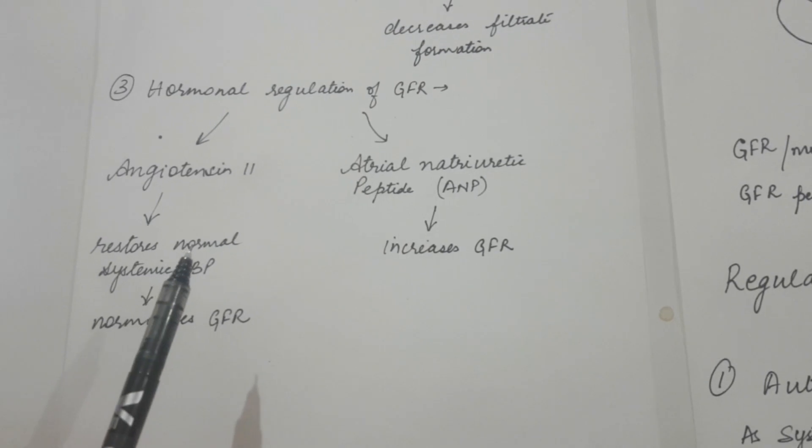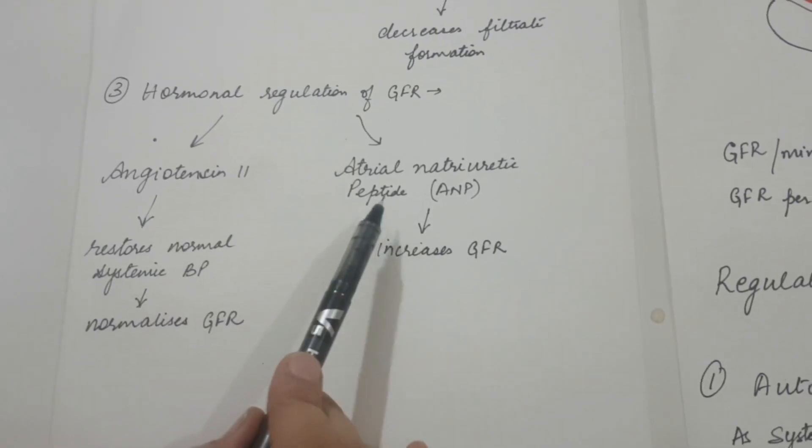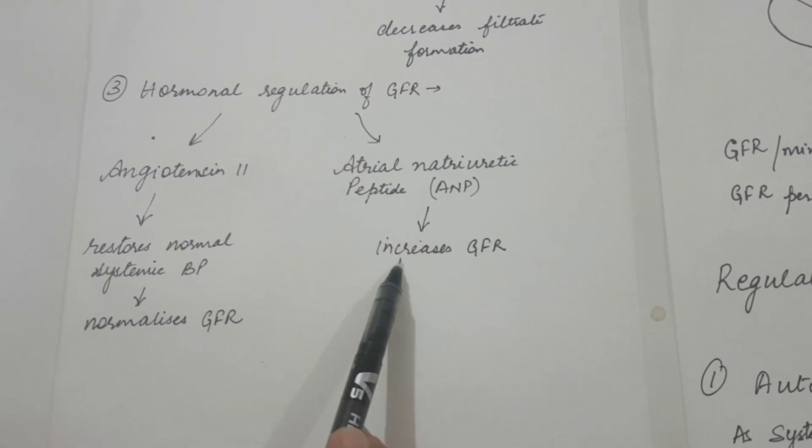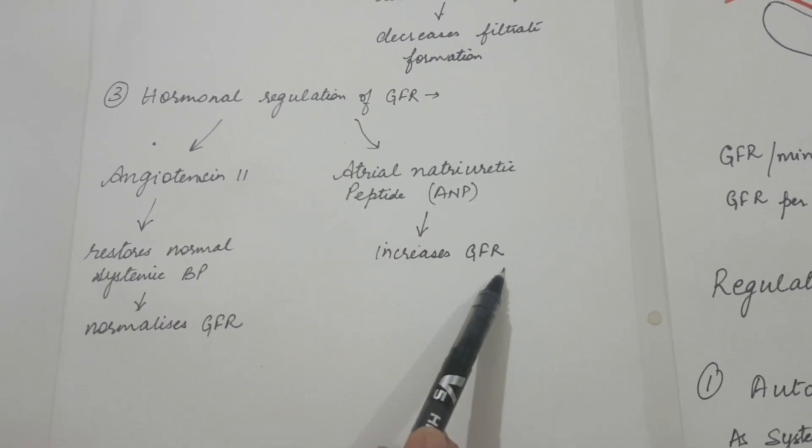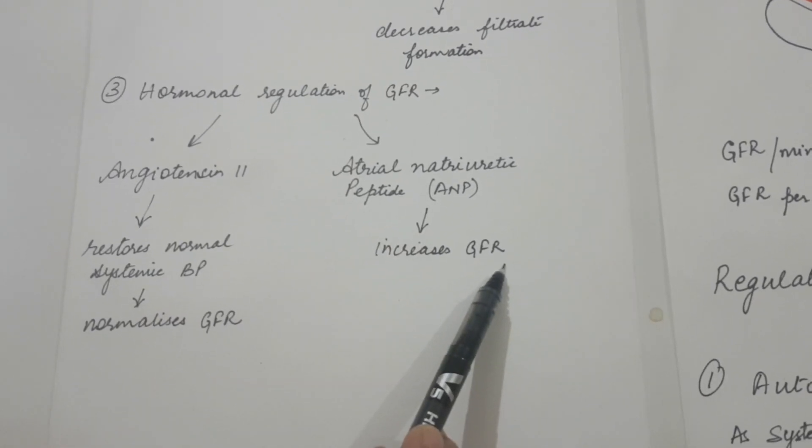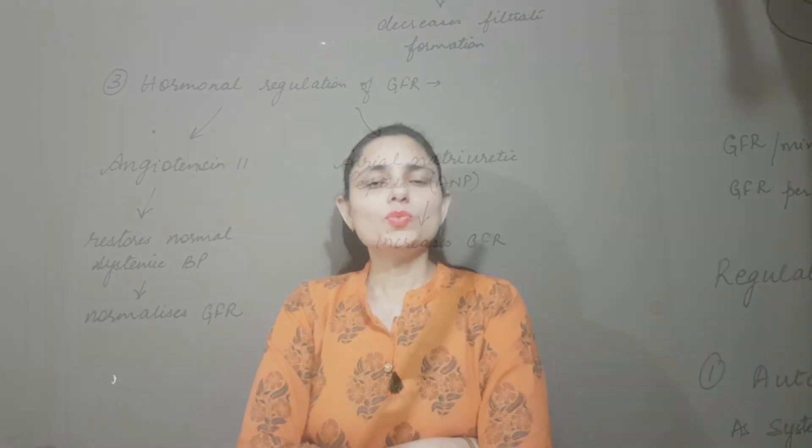Atrial Natriuretic Peptide is produced in the atria, and it increases the glomerular filtration rate. I hope this topic is clear to you all. If you have any queries, leave a comment in the comment section. Thank you, have a nice day.